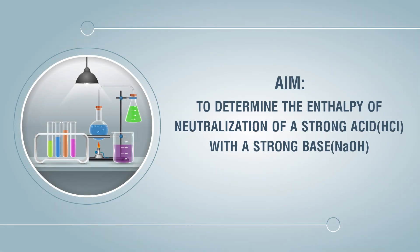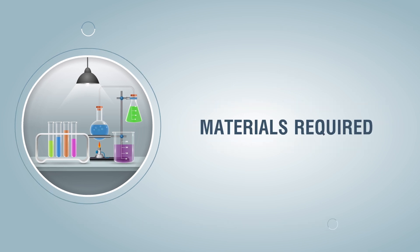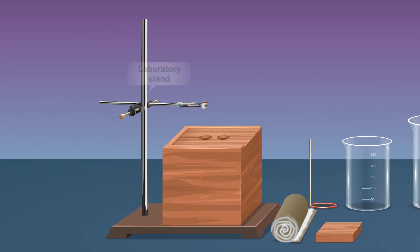Aim: To determine the enthalpy of neutralization of a strong acid HCl with a strong base NaOH. Materials required: laboratory stand, calorimeter, cotton wool, stirrer, small wooden block.